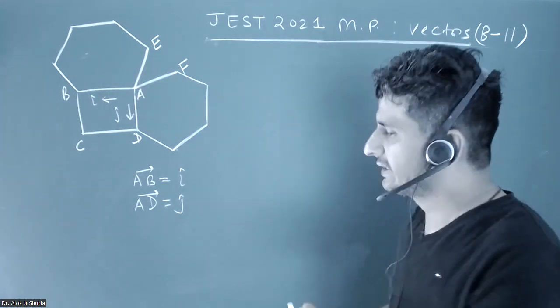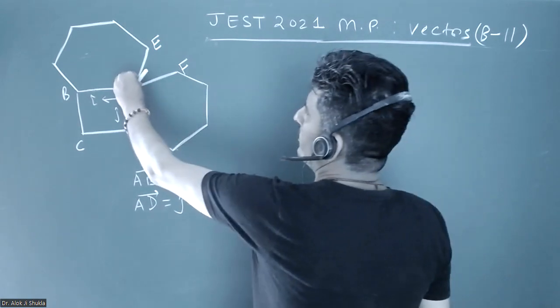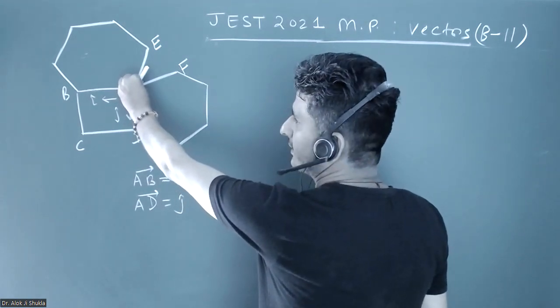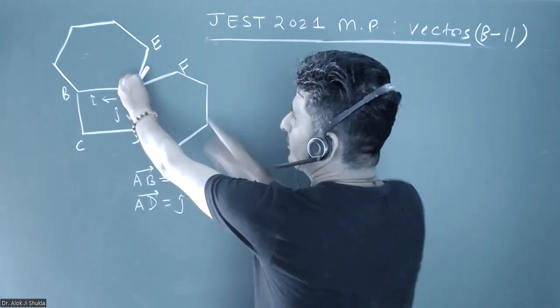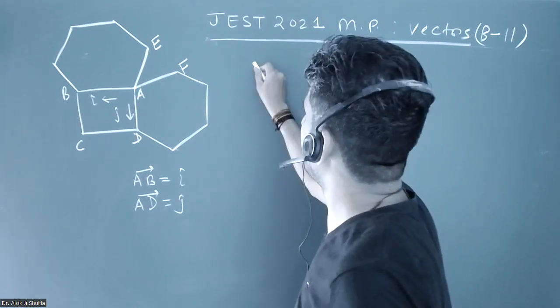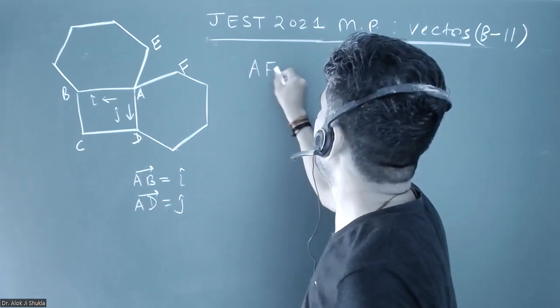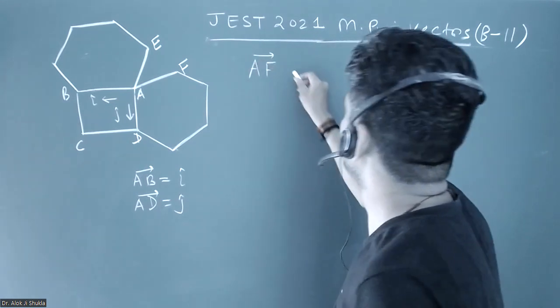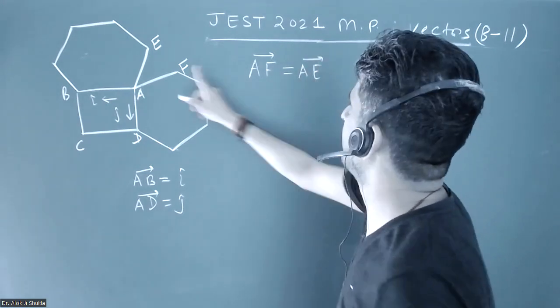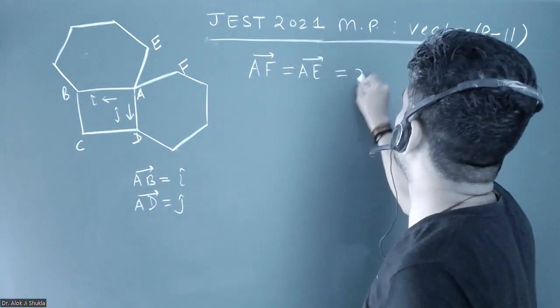Now, the AF vector you have to imagine a little bit. Once it's lifted like this, making angle theta, I can take the AF vector as—AF and AE will be the same vectors once lifted and combined. Suppose it is x i cap plus y j cap plus z k cap.